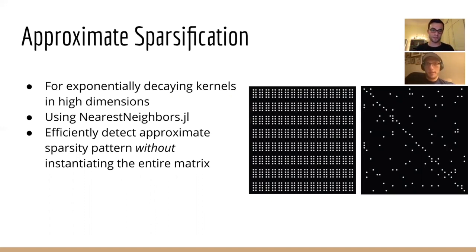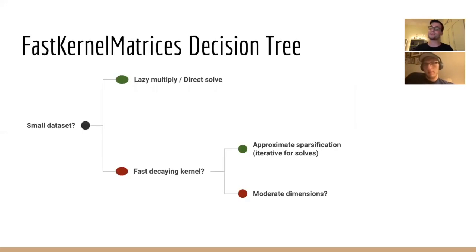So the sparse approximation to the full kernel matrix can be found by putting a threshold on the distance beyond which the kernel is approximately zero. And this means we don't have to instantiate the full matrix since points that are inside a certain range around another point can be found very efficiently with tree-based domain decomposition algorithms like those provided in NearestNeighbors.jl. And as an example, we can see a schematic of a dense kernel matrix and its sparse approximation on the right. And the sparsity pattern that's detected can then be used to accelerate matrix multiplication and solves, for example, using an iterative solver like the conjugate gradient method.